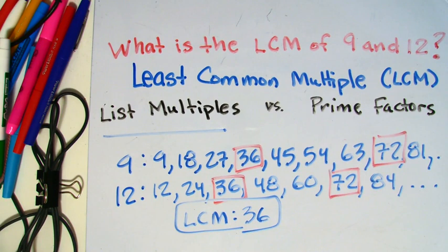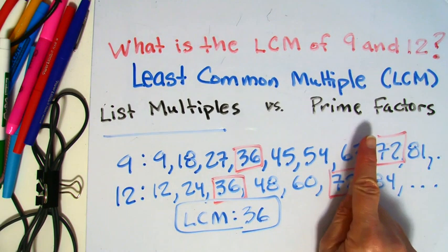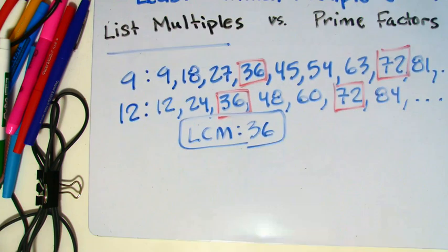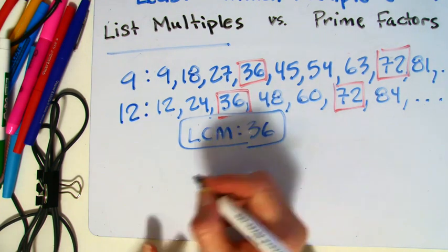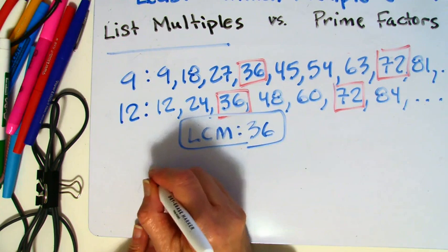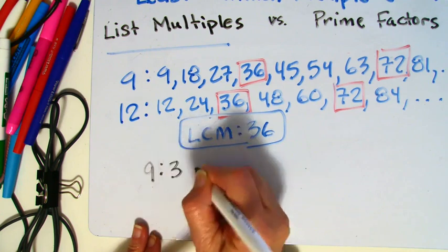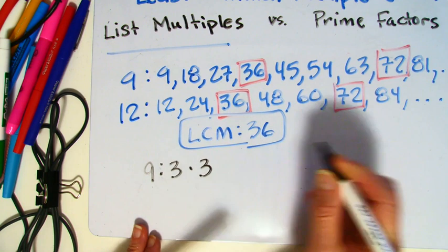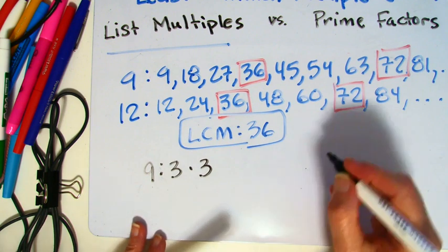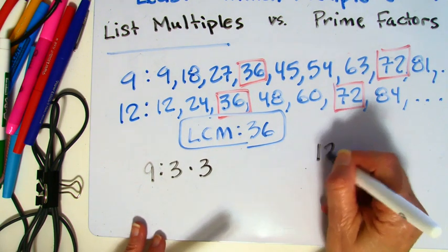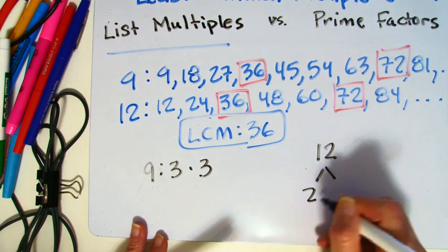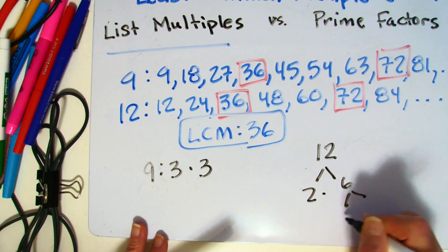Now, let's go ahead and use the prime factors method. And the goal is to first write out the numbers in prime factor form. Okay, so I know that the factors of 9, the prime factors, are 3 times 3. I'm not quite sure of 12. I'm going to just go ahead and do a quick tree. And you can always do this if you're not sure.